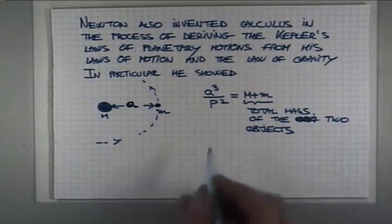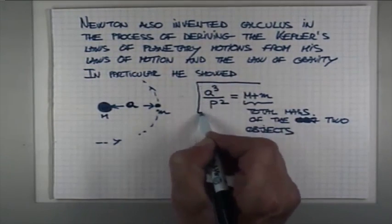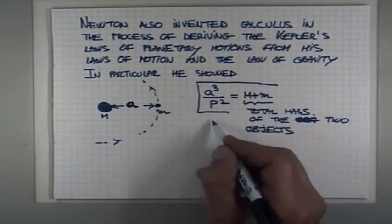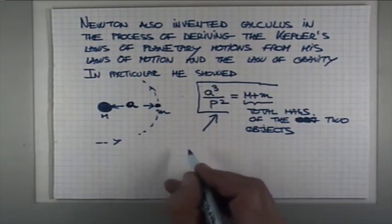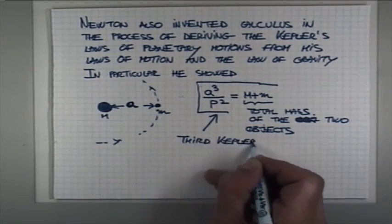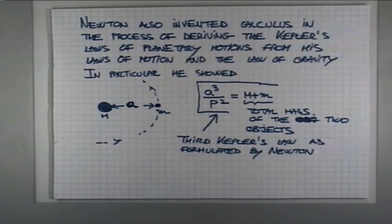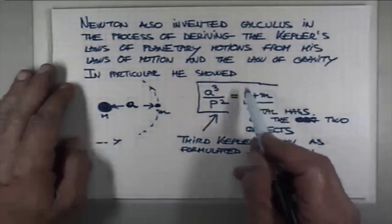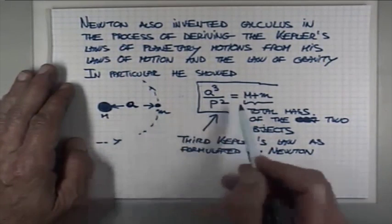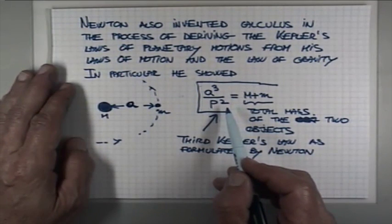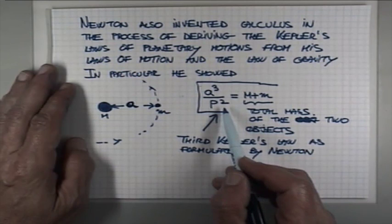And this is what we call third Kepler's law as formulated by Newton. And it is used in astronomy all the time to determine the masses of objects revolving around each other.